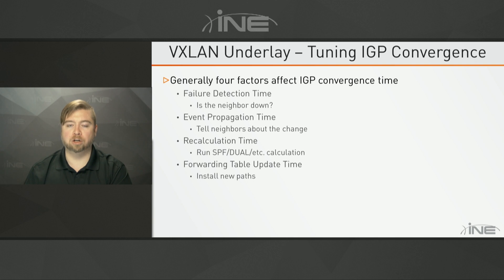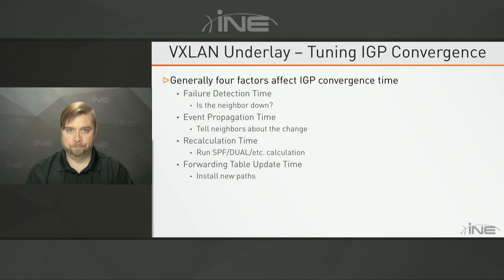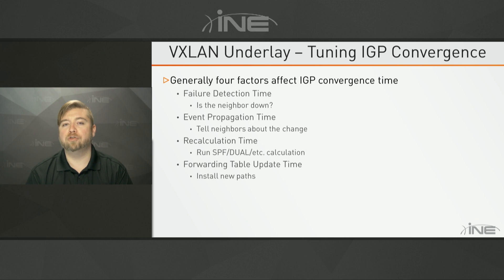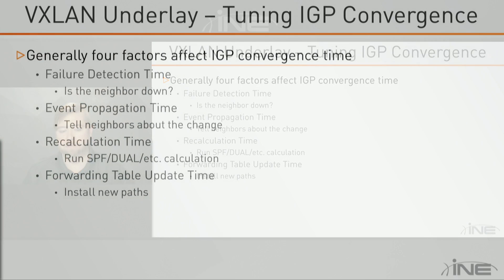Once everybody knows about the failure, then we're going to recalculate the topology. We take those new changes and put them into whatever our algorithm is — SPF for OSPF, DUAL for EIGRP, BGP best path selection — and we need to find what is the next best path. Once we figure that out, the final fourth step is to install this down into the hardware. In the case of Nexus — the 3K, 5K, 6K, 7K, 9K — we're talking about doing layer 3 routing forwarding in hardware, which means taking the routing table and writing it down to the TCAM of the physical line cards.